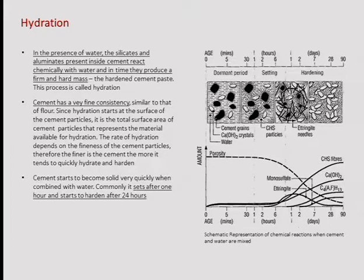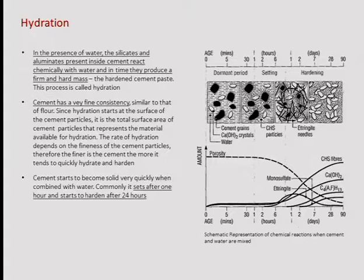The time frame for the chemical reaction is important. Once you start mixing the ingredients, everything sets up in about an hour, making it more difficult to work. In about a day, you start getting higher strength. After two to four days, you may be able to remove the formwork. After 28 days — roughly a month — you'll have between 95% and 100% of the required strength. So if you want to test how your concrete resists compressive loads, you do that after 28 days of curing.